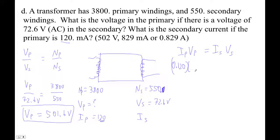And then the voltage in the primary is 501.6 equals current in the secondary times 72.6. So 0.12 times that answer I got divided by 72.6. And that's 0.829.